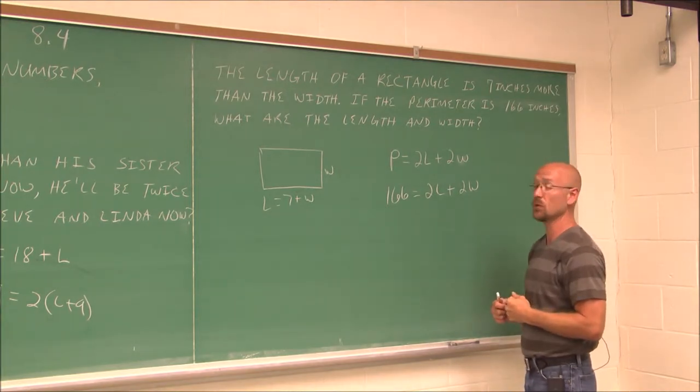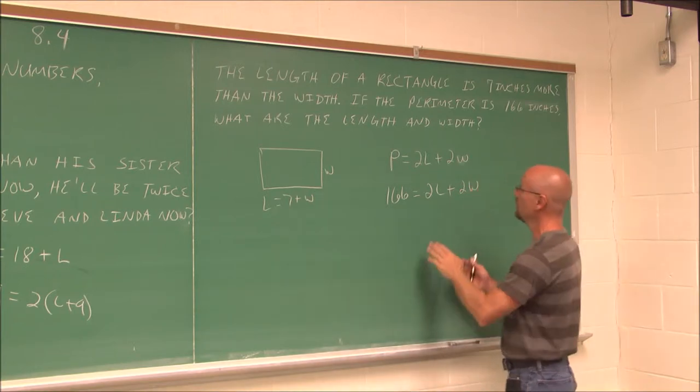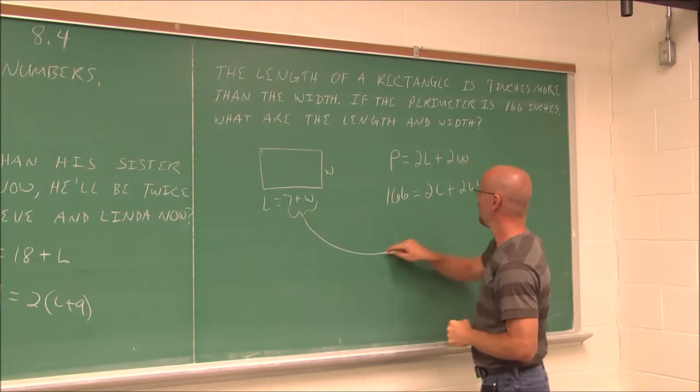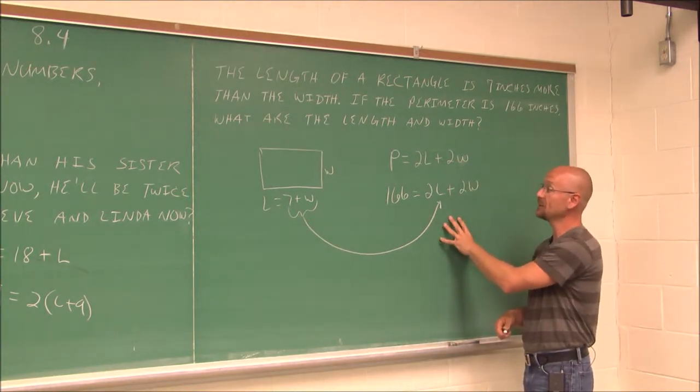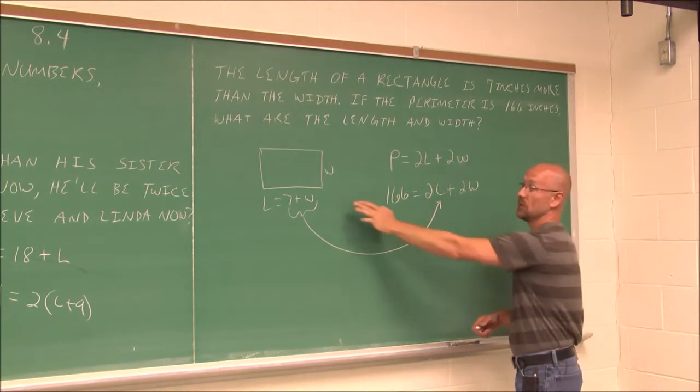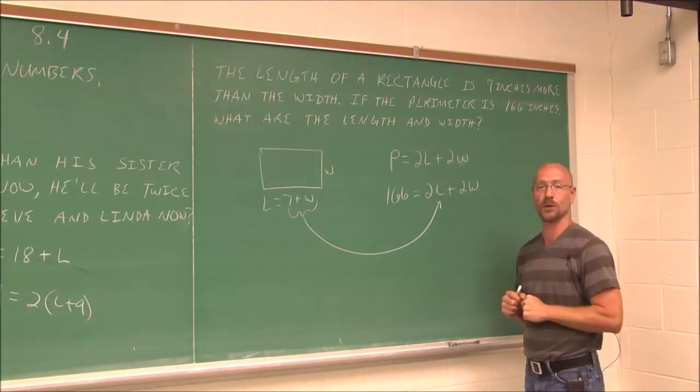Again, it's another system of equations. Since we already have this one, l equals seven plus w, we can do a substitution. Replace l for this value. So again, it's a system of linear equations. I'll let you try it out and solve this one. Since you have your two equations built, do a substitution. Find that width and length and make sure you check your work.